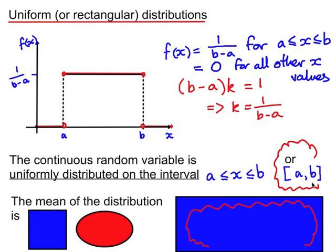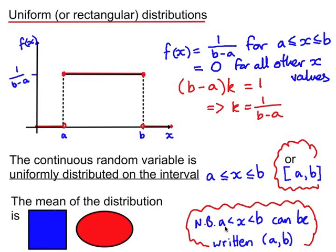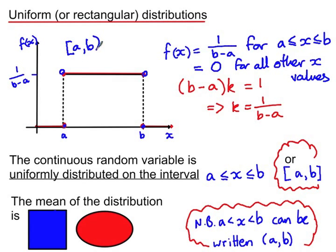We can also write that using square brackets. If we were saying a < x < b, that interval can be written in round brackets. In that case, the open and filled circles would be reversed — the filled circles would be at the bottom and the open circles at the top. Or we could have combinations: if we include a but not b, we'd have a filled circle at a and an open circle at b.